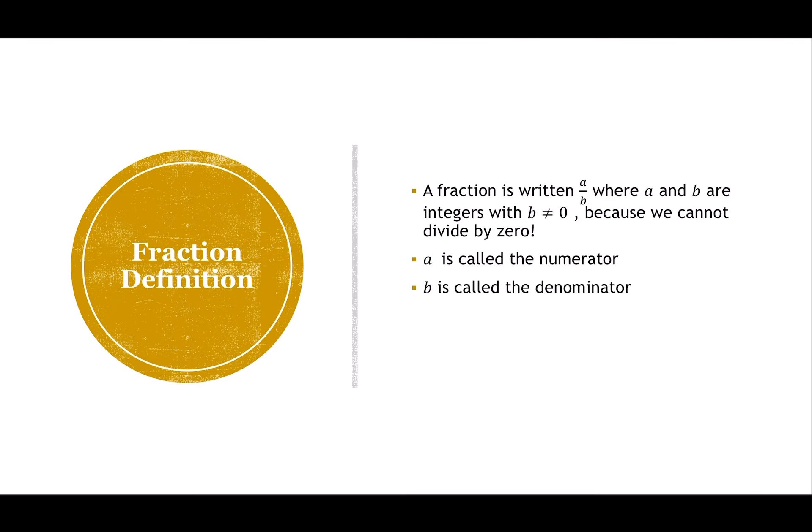So a fraction is written like a over b, where a and b are integers and b isn't zero, because remember we can't divide by zero.